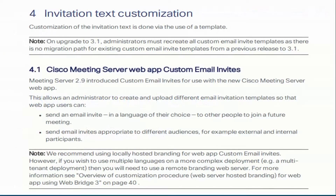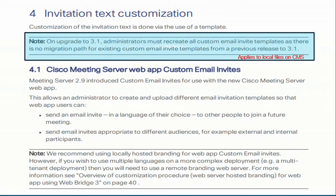In chapter four of the customization guide, we see invitation text customization is done via the use of a template, just like on previous versions. One thing we should note is that on upgrade to 3.1, administrators must recreate all custom email invite templates, as there is no migration path for the existing custom email invite templates from the previous release to 3.1.